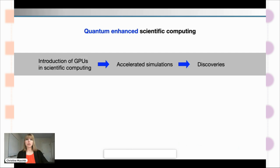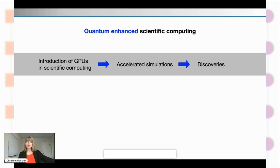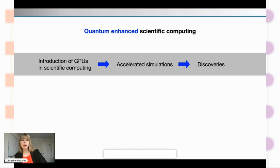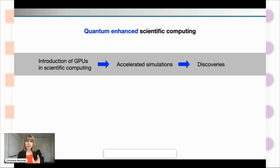To wrap up, I want to make a striking comparison that motivates me about quantum enhanced computing and the vision behind my work. It's a reminder of when we introduced GPUs into scientific computing. What GPUs did was basically give more capabilities to computational abilities — accelerating simulations. These accelerated simulations led to so many discoveries in astrophysics, nuclear physics, particle physics, and biosimulations — it really took off when people had these accelerated simulation capabilities and could make new breakthroughs because of that.